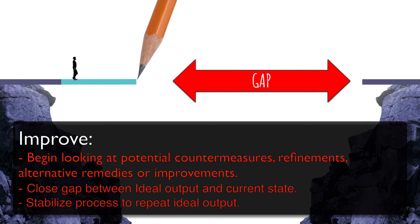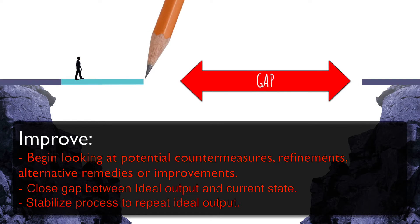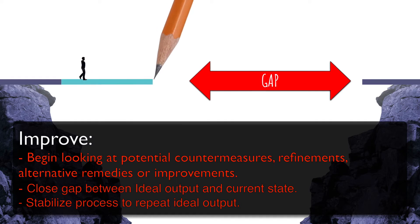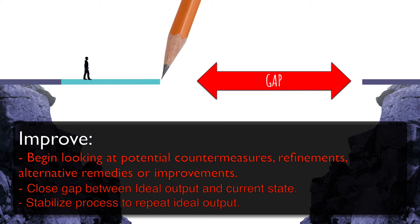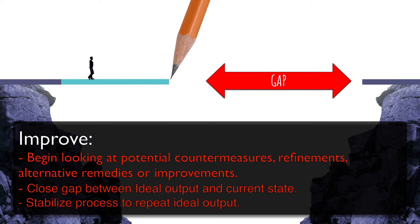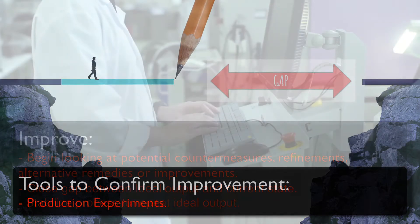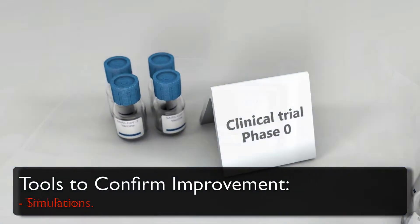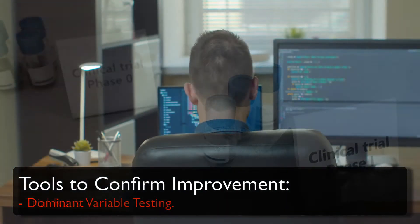After you have a few different solutions that you would like to try out, you can then implement the new process or system within a controlled environment and take some time to monitor and measure the results. This will help you ensure that the process you are about to release is in fact an improved process that can sustain the results that you observe. Some methods that you can use to test your possible improvements are production experiments, simulations, trial runs, and dominant variable testing.